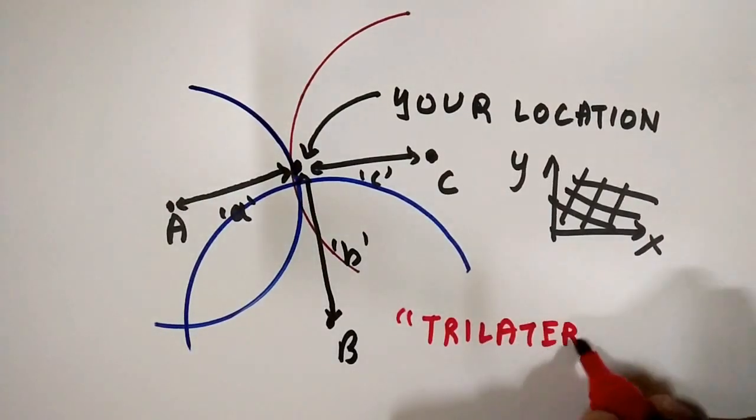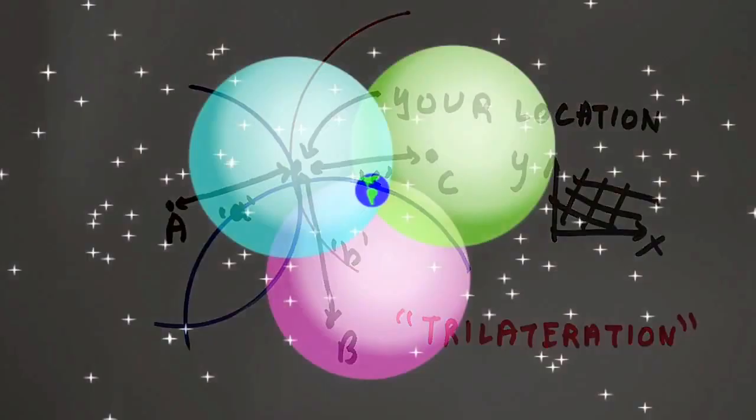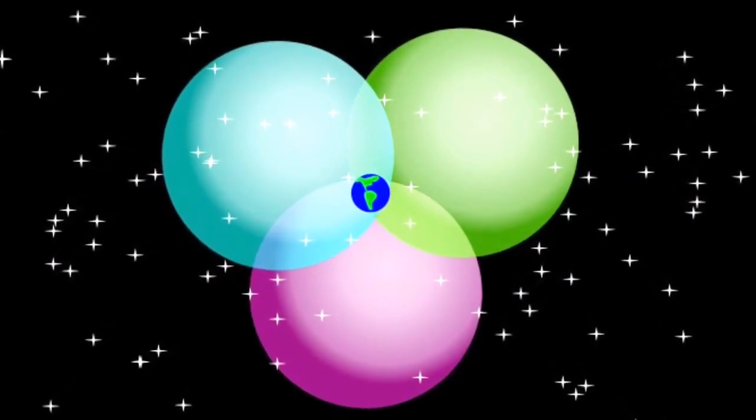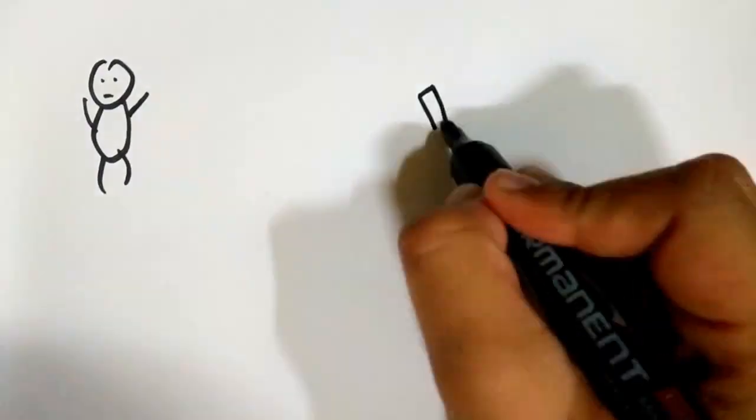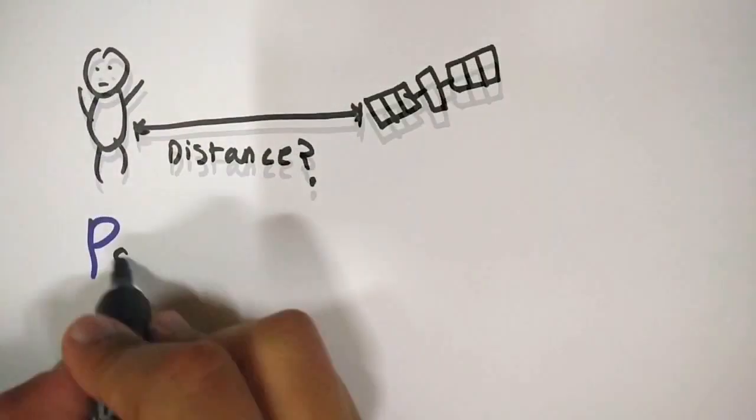This method of determining position is called trilateration. Similarly, GPS determines your location by using three spheres instead of three circles. But for that, you need to know your distance from each of these satellites.